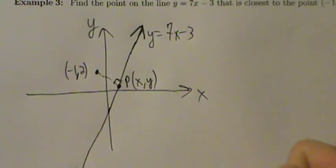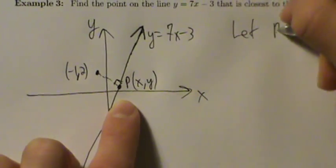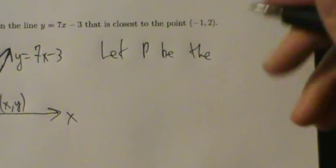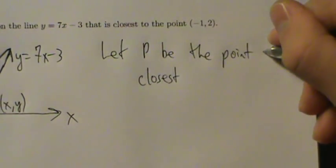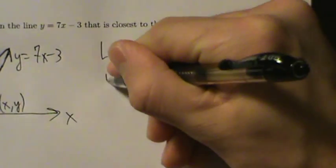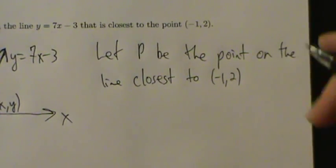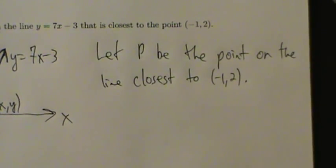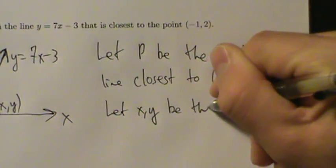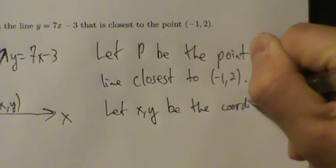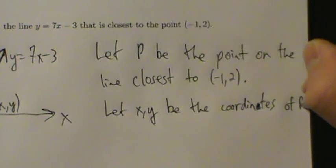So that's our point P — that's step 1, draw and label the picture and assign variables to all the quantities. The only quantity we have to worry about is really just this point. Let P be the point on the line closest to negative 1 comma 2, and let x and y be the coordinates of P.